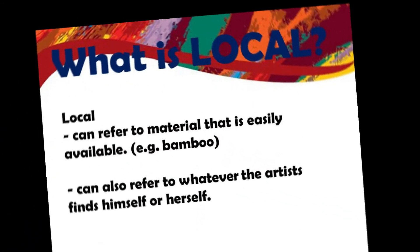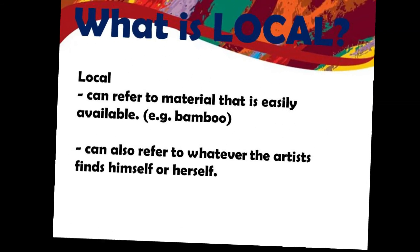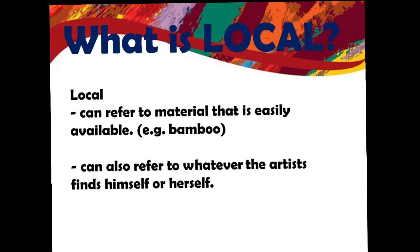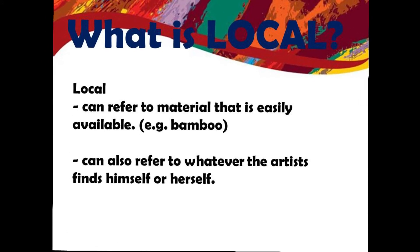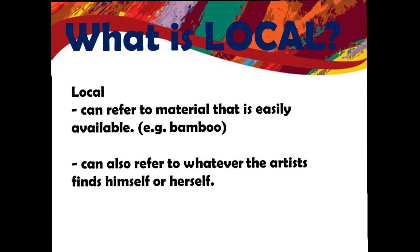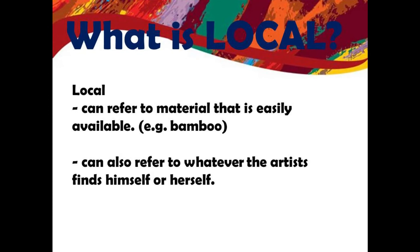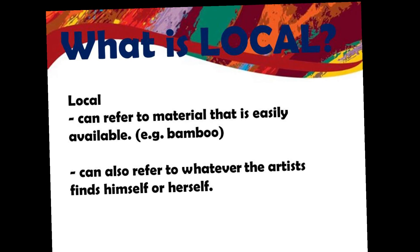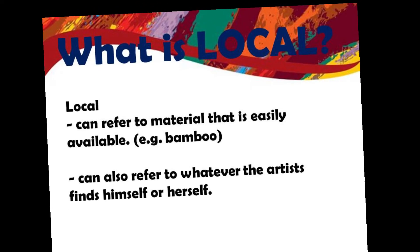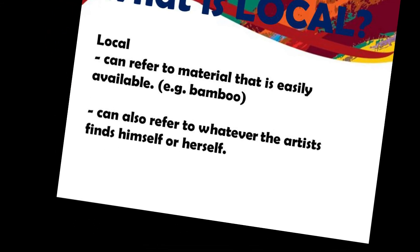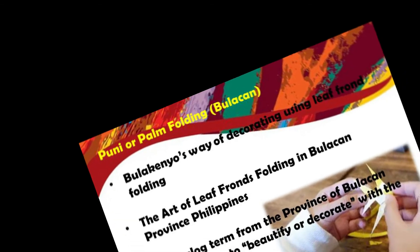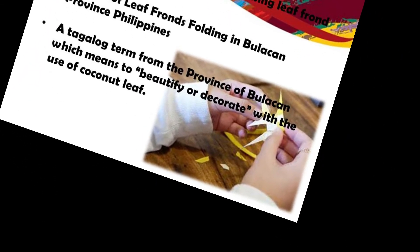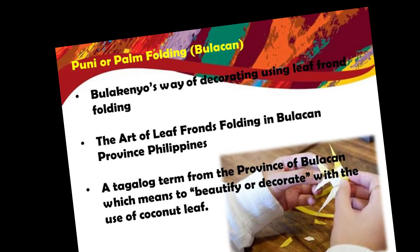So, what is local? Local can refer to material that is easily available, like bamboo, coconut shell, paper, and so on. These are resources that can be found readily, and it could also be referred to as materials that can be used to fabricate a finished element. Local can also refer to whatever the artist finds around himself or herself. Now let's talk about the material for Contemporary Arts and its main characteristics for the local.